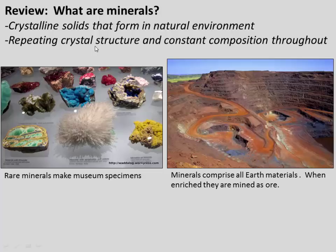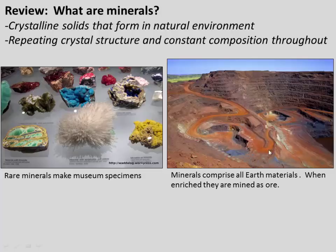Although you might visualize minerals as something you've seen in a museum, like a gem-quality mineral, most minerals are just unglamorous, dirty parts of rock. But if you concentrate a certain mineral in rock high enough — for example, this bright red rock is concentrated in the mineral hematite, which is an iron oxide — then that rock may actually become an important economic ore. In this case, hematite is essentially being mined as a source of iron ore.